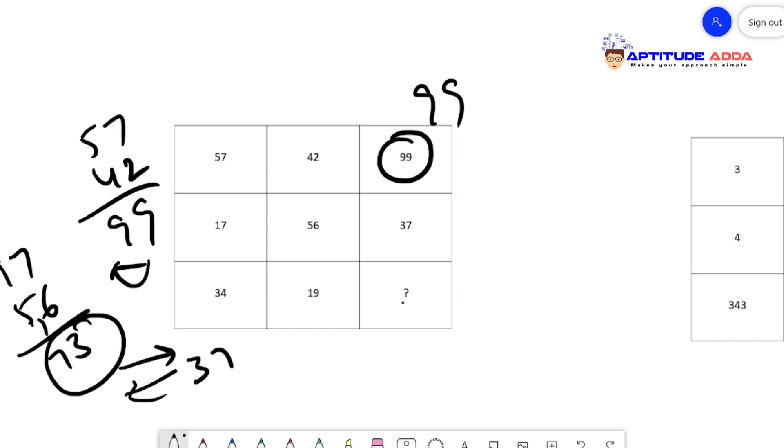Wow, I got the logic. So getting the answer is just five seconds now. 34 plus 19 gives you 53, so when I reverse it, it will be 35. So 35 is the answer, it's as simple as it is.